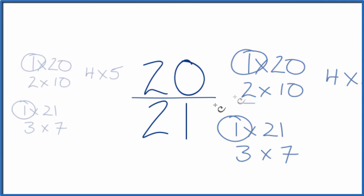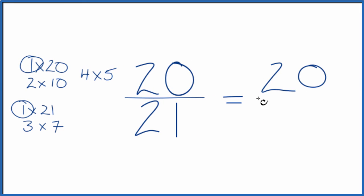Let's move these over here. So 20 divided by one is 20 and then 21 divided by one is 21.